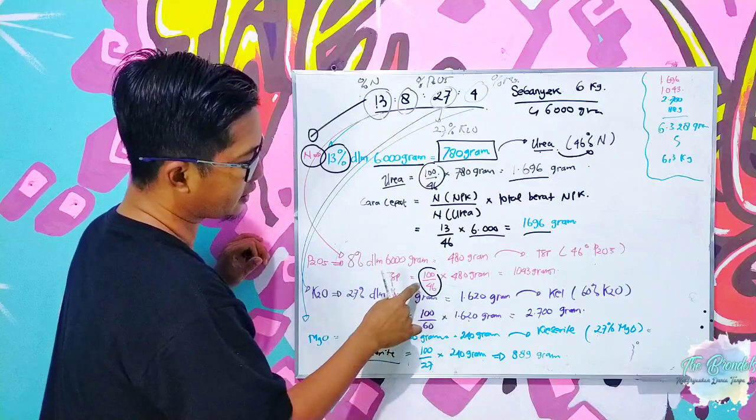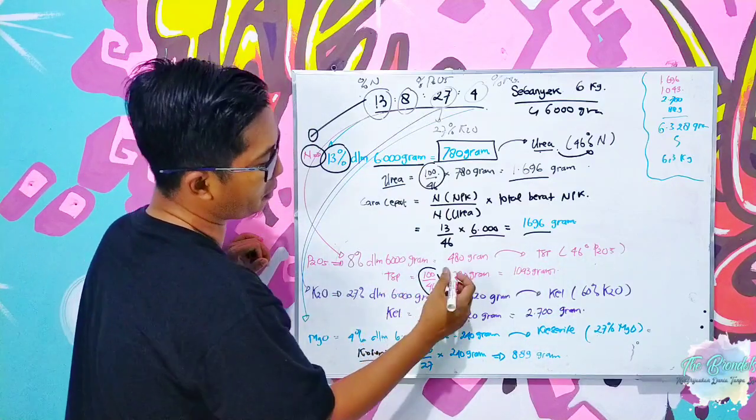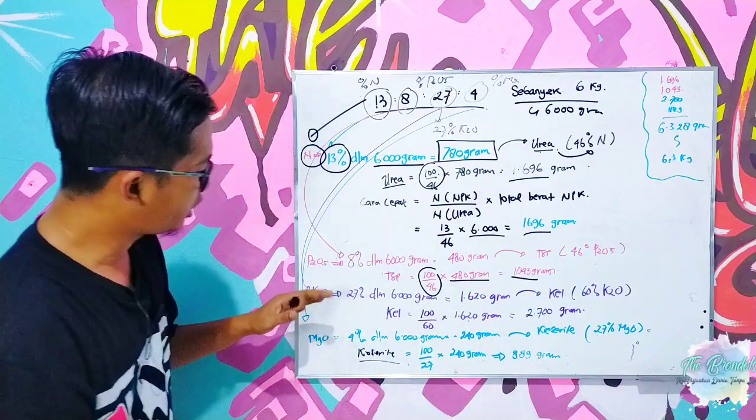Ketika kita menggunakan TSP sebagai sumber pospat atau P2O5-nya, maka perhitungannya akan kebalik seperti di urea tadi. Karena TSP 46 persen, maka 100 per 46 dikalikan 480 gram, maka ketemu 1043 gram.